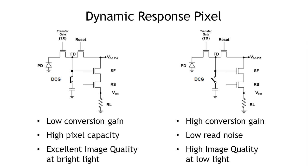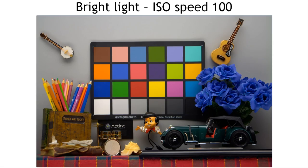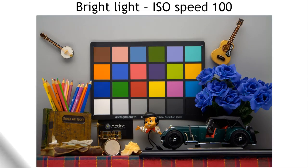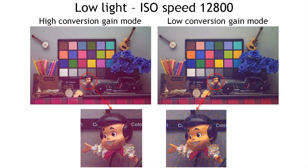Let's look at some results of using the dynamic response pixel in our latest sensor architecture. This image is taken from an APS format sensor for DSLR applications. The sensor has 16 megapixels and a pixel size of 4.78 microns. At low ISO speed — 100 ISO — the sensor provides very good image quality, mainly due to the large pixel capacity of 50,000 electrons. When going to low light conditions at ISO 12,800, switching to high conversion gain mode significantly reduces the noise floor and boosts sensor sensitivity.